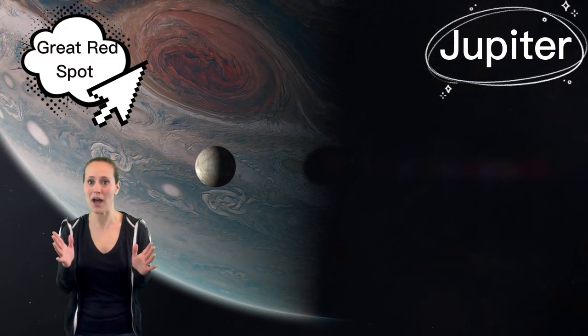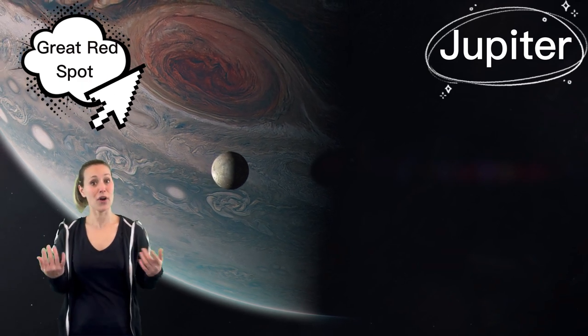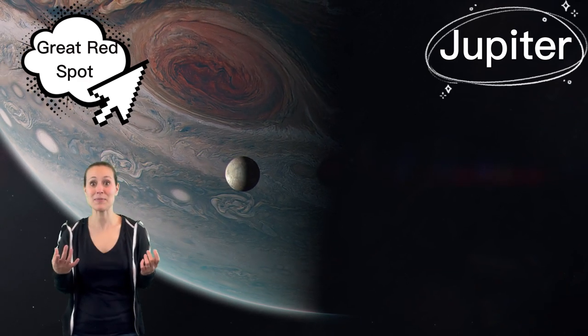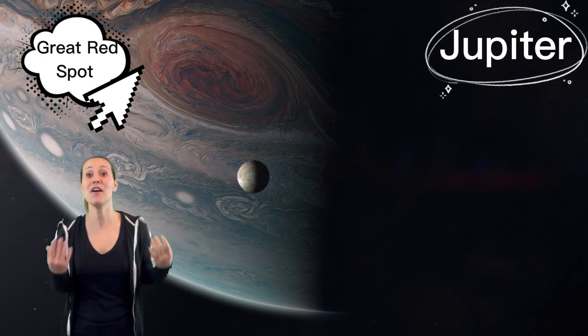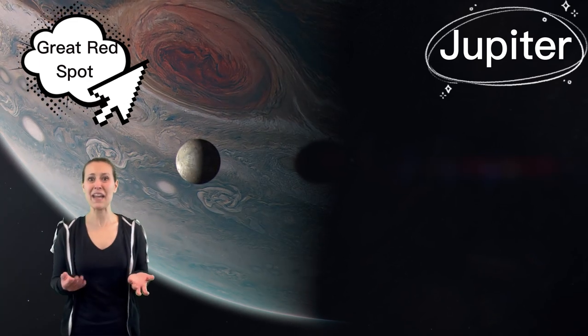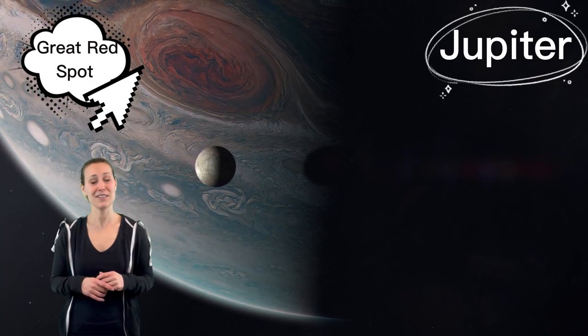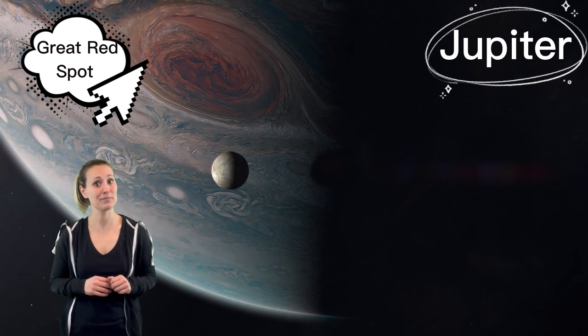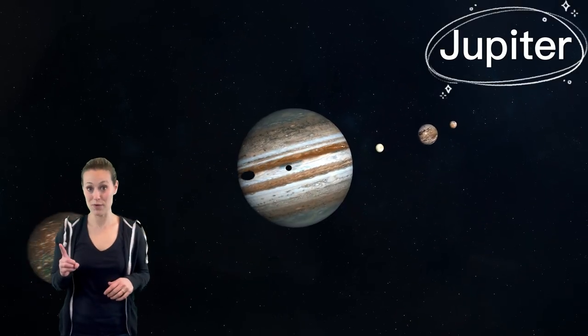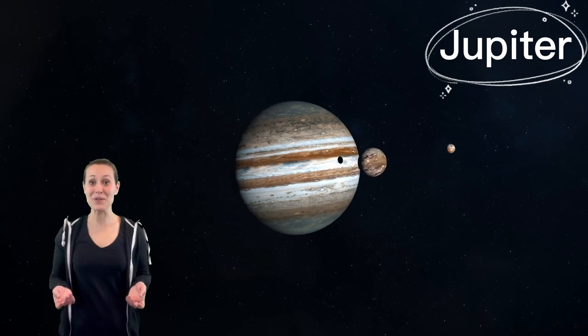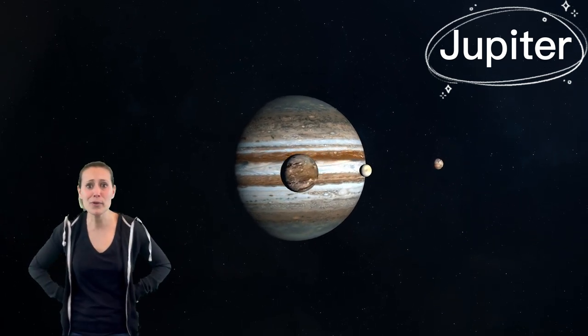Jupiter is our solar system's biggest planet. It's so big that all the other planets in the solar system could fit inside Jupiter. It also has what we call the Great Red Spot, which is the equivalent of a hurricane on Earth, except it's been happening for hundreds of years. A hurricane that lasts for hundreds of years? No thanks. I'll stick to planet Earth. Earth only has one moon, but Jupiter has 64 moons. What's a planet need with 64 moons?